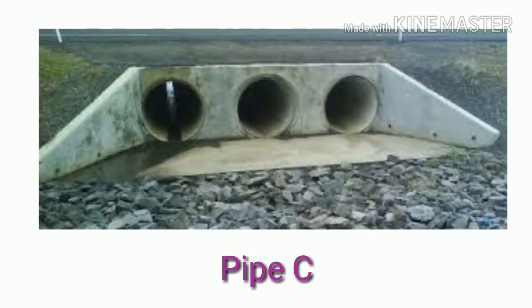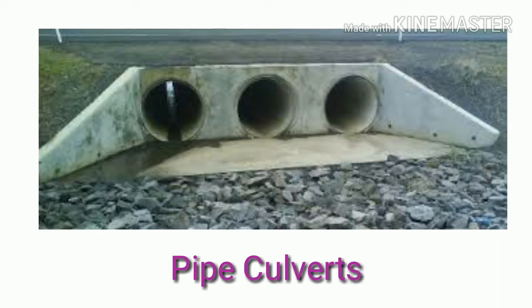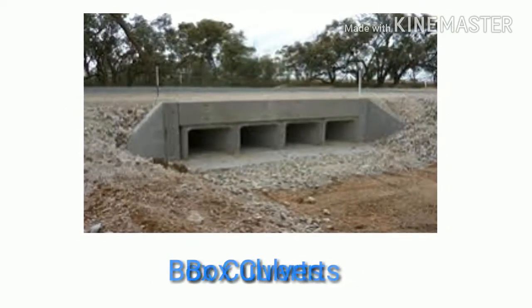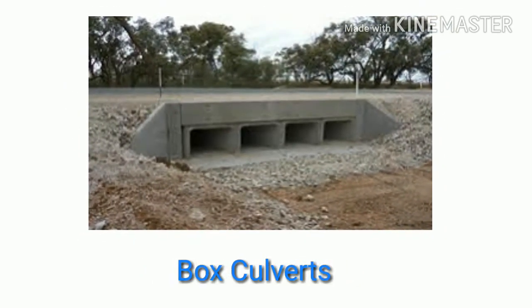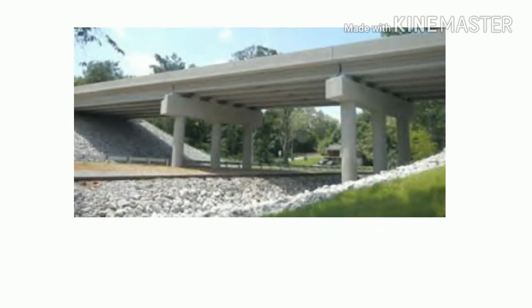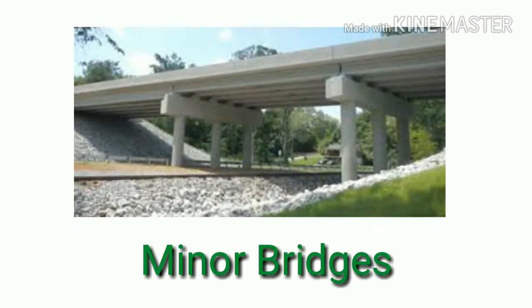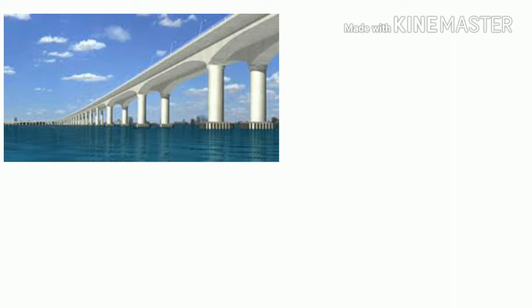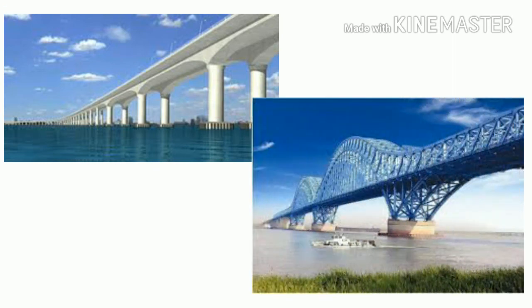Pipe culverts are small openings for water streams. Box culverts are constructed up to an opening of 6 meters. For river streams and major waterways, minor or major bridges are constructed based on the stream width.